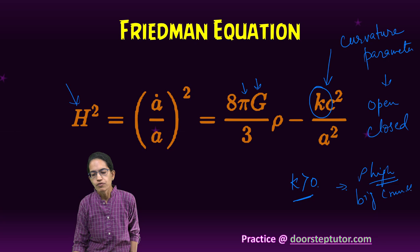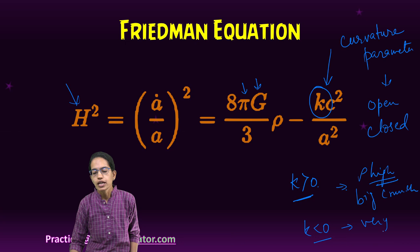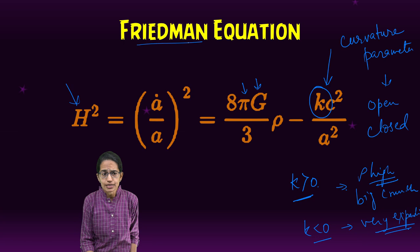However, if the value of K is less than zero, it would explain an ever-expanding universe. And that was the basic idea behind this research of Friedman.